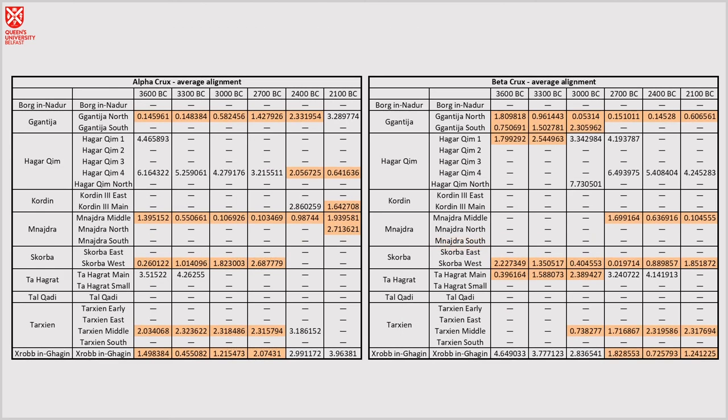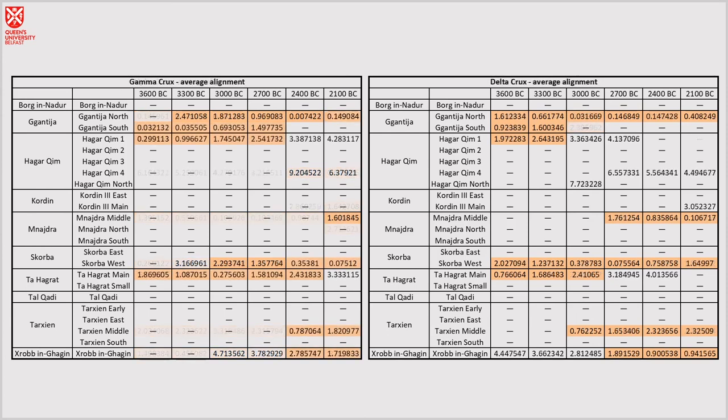Now, the thing that did come out as significant, and this is the interesting part, is the Crooks, which is the Southern Cross constellation. If we see, the Southern Cross constellation is formed of four different stars, Alpha, Beta, Gamma, and Delta Crooks, and if you look at the graphs for each of these, you can see that it's really lit up. These, these values in pinkish-orange color means that they're very precise. So, a lot of the temples are very precisely aligned to these different stars. Obviously, not all of them, but there is quite a significant number.